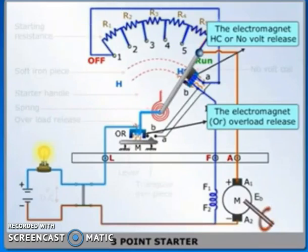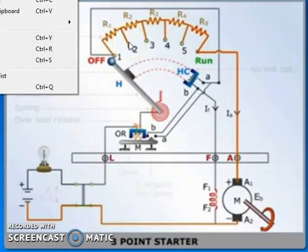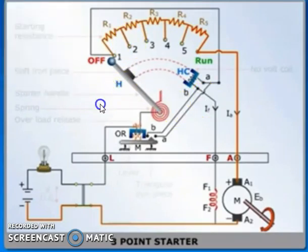Function of the HC or low-volt release coil: In case of power failure, electromagnet HC gets demagnetized, and the spiral spring brings the handle back to its OFF position. Now the circuit is cut. If during power failure the handle fails to return to OFF position, the motor might get damaged.